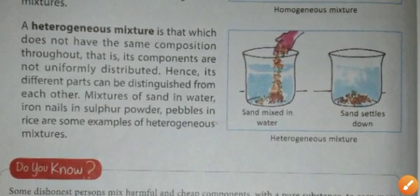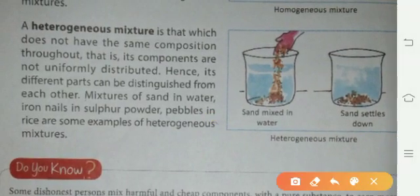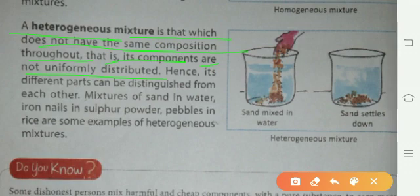Next, we have heterogeneous mixture. A heterogeneous mixture is one which does not have the same composition throughout — that is, its components are not uniformly distributed. Hence its different parts can be distinguished from each other.